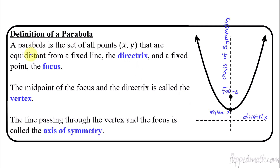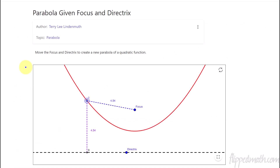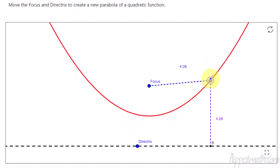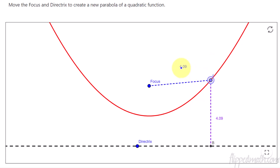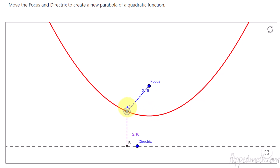Let me show you what this equidistant thing means with a little graph on GeoGebra. I'll put the link in the description so you can play around with this — it was made by Terry Lee Lindenmuth, so thank you for that. As I drag a point on the parabola around, 4.09 is the distance to the focus, and 4.09 is straight down to the directrix. It's all points equidistant from the focus and the directrix — that's what a parabola is.